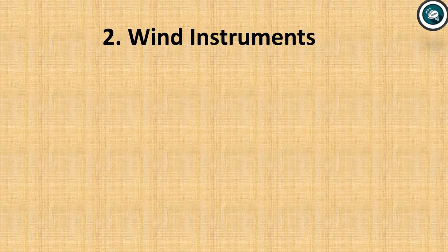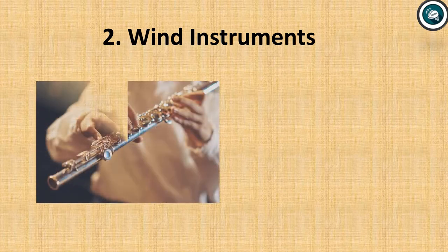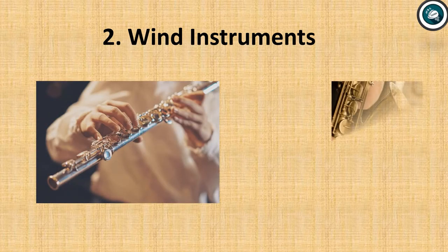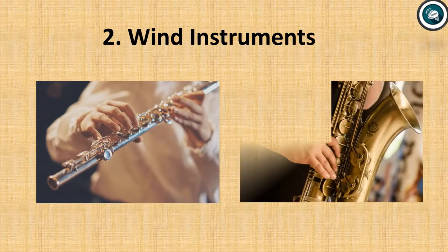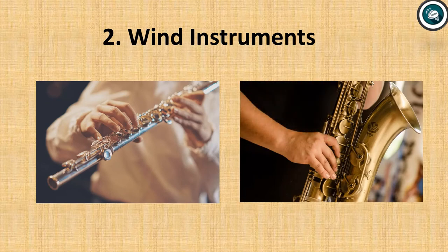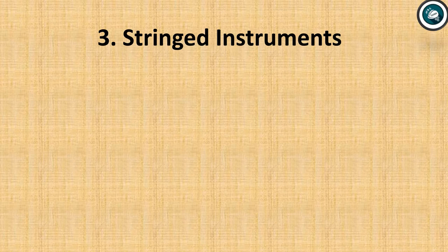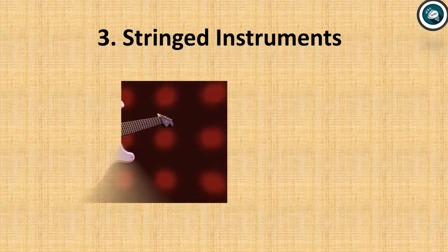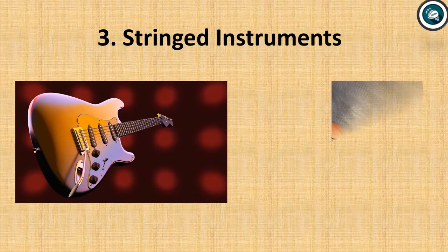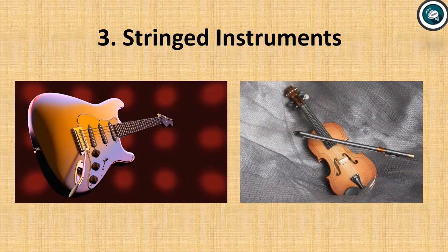We have wind instruments. Examples include flutes, saxophones, horns and trumpets. Examples of stringed instruments include guitars, violins and harps.